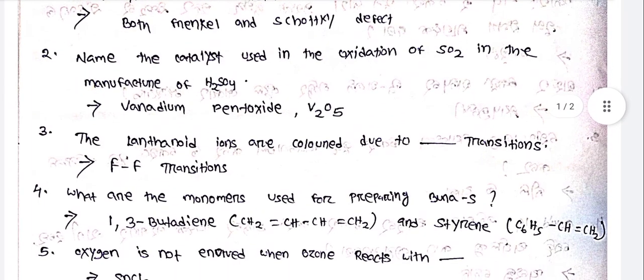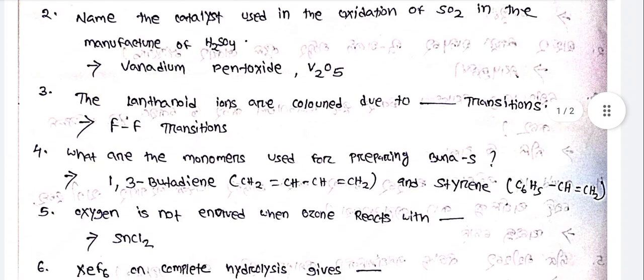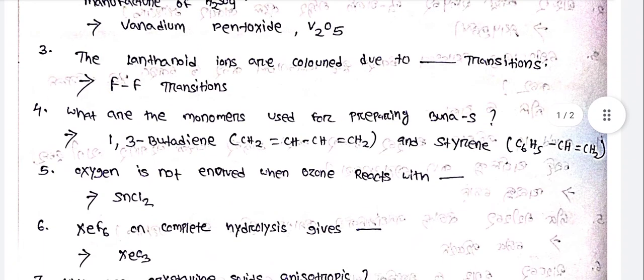Name the catalyst used in the oxidation of SO₂ in the manufacture of H₂SO₄. The catalyst used is Vanadium pentoxide, V₂O₅.